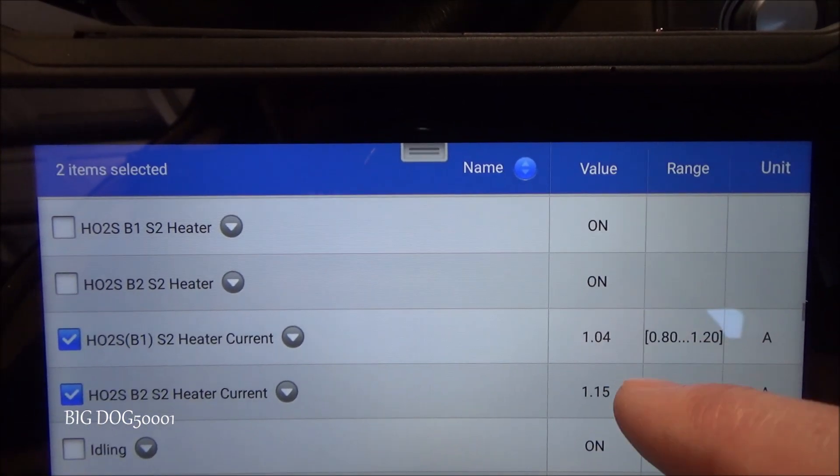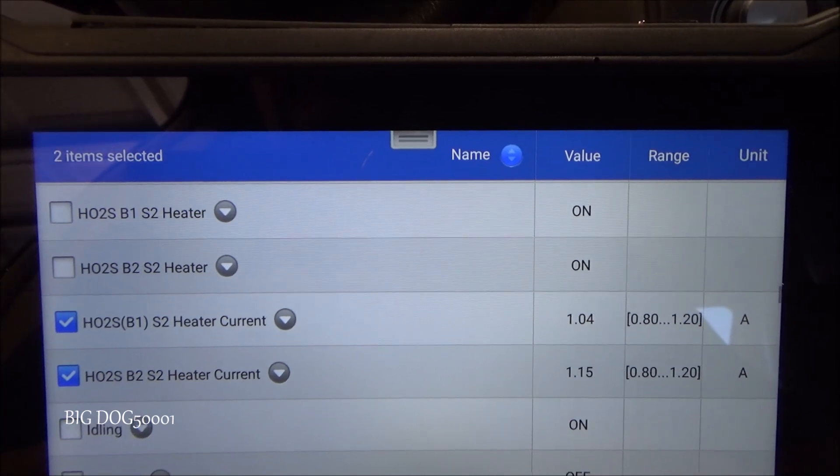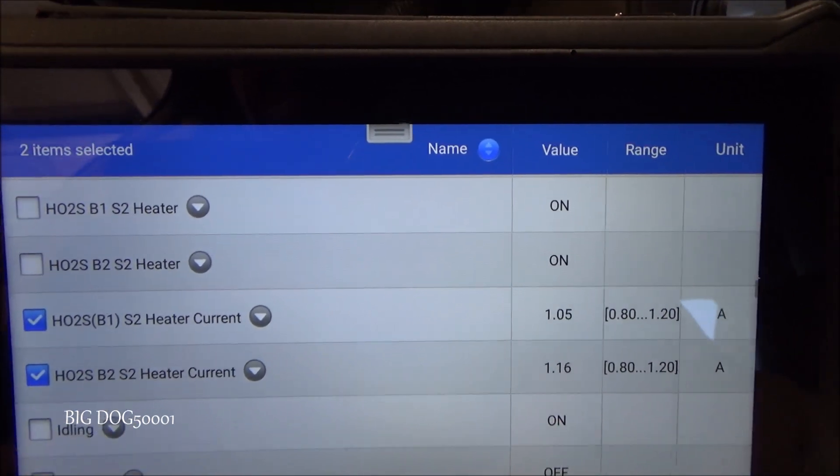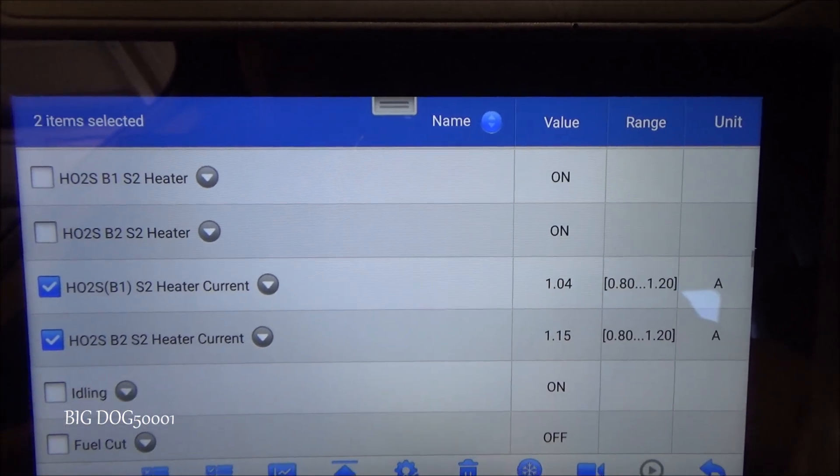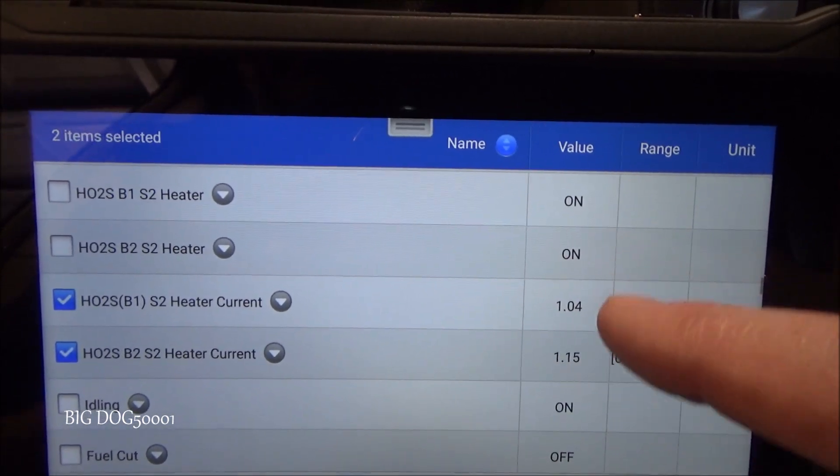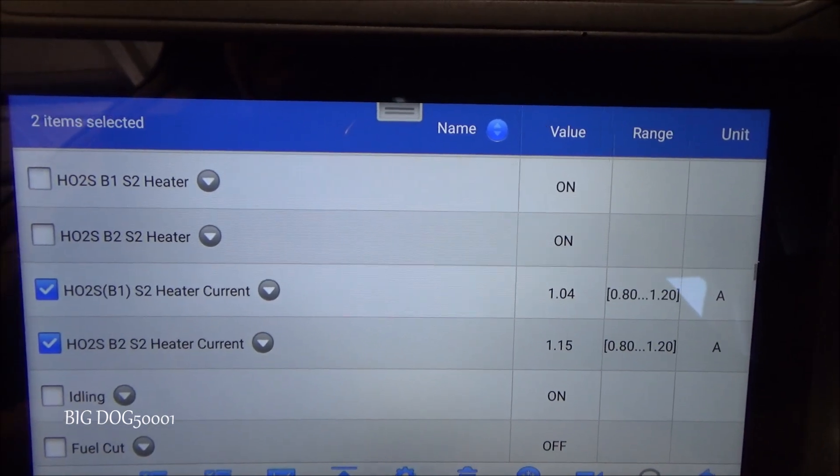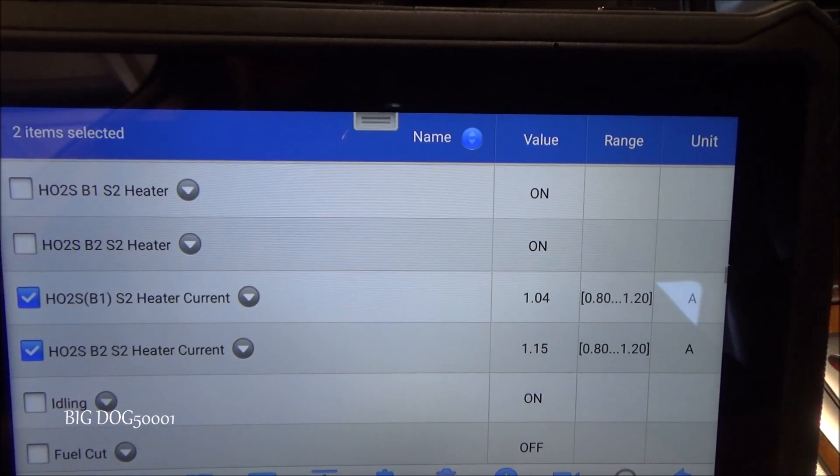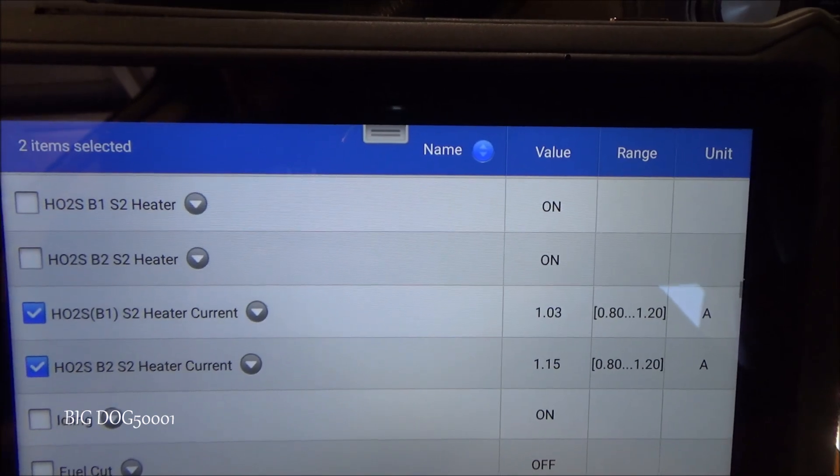But what that indicates to me is that the wiring integrity is okay. Everything I've seen so far shows me that the wiring and everything is good. Because if the signals would have dropped out either all the way high or all the way low, or we didn't have any amperage right here, then we would know we had a wiring integrity problem. But right now no wiring integrity problem.